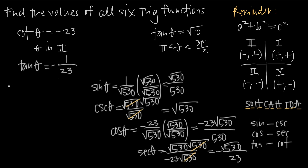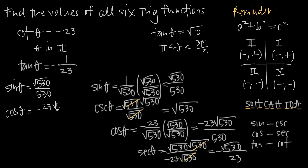To summarize our findings: sine of theta equals square root 530 over 530, cosine of theta equals negative 23 square root 530 over 530, and tangent equals negative 1 over 23.